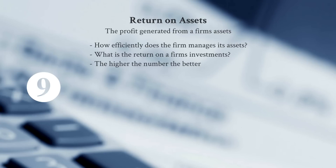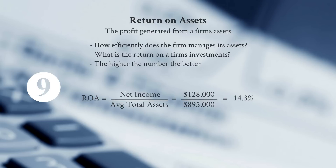Number nine on our list is Return on Assets — a key indicator of how well the firm is managing the investments made by the company. It's the profit generated by the firm's assets, so we ask: what return are we getting? The higher the number, the better. ROA is calculated by taking net income divided by average total assets — in this case, $128,000 divided by $895,000 gives a 14.3% return.